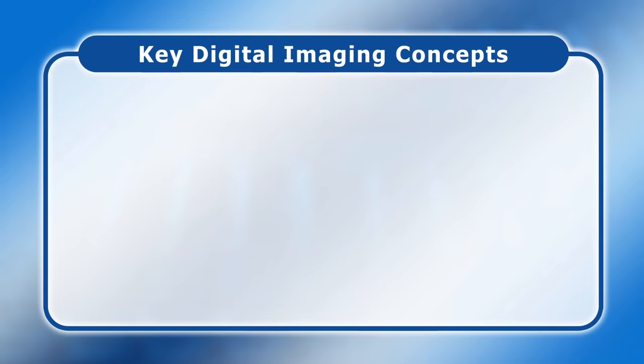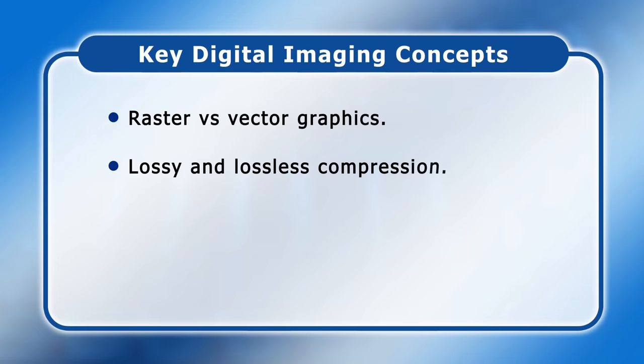To understand different image file formats we first need knowledge of some key digital imaging concepts. These are the difference between raster and vector graphics, lossy and lossless compression, and finally colour spaces, bit depth and alpha channels.